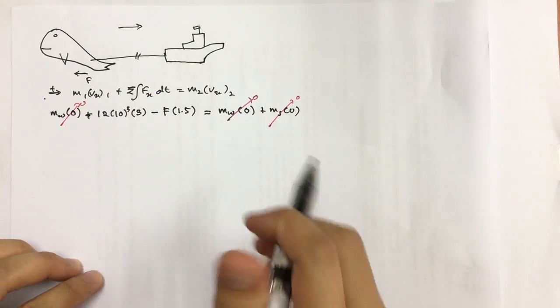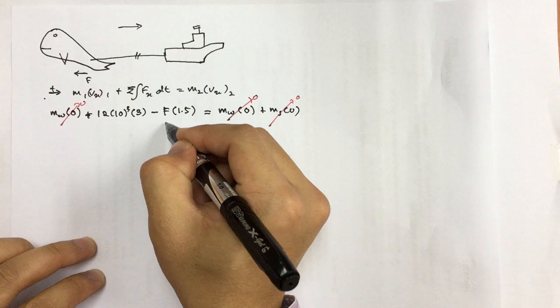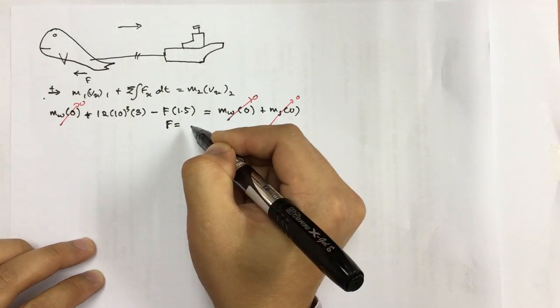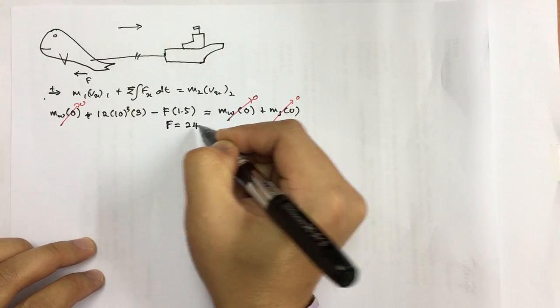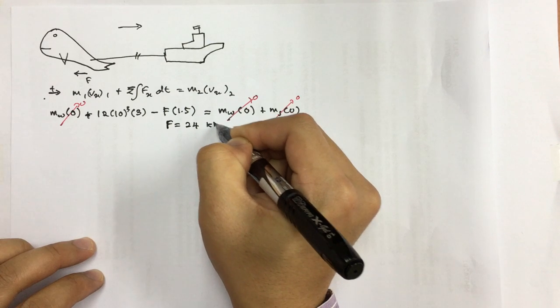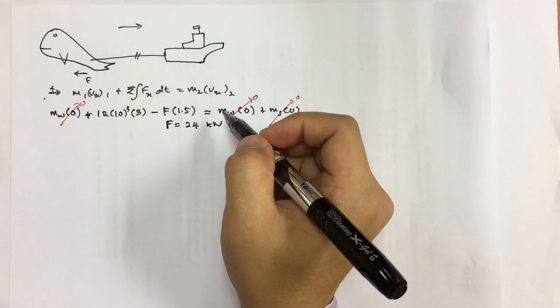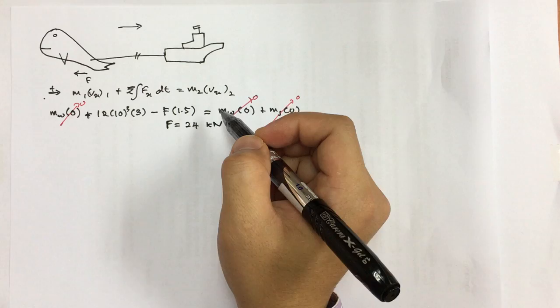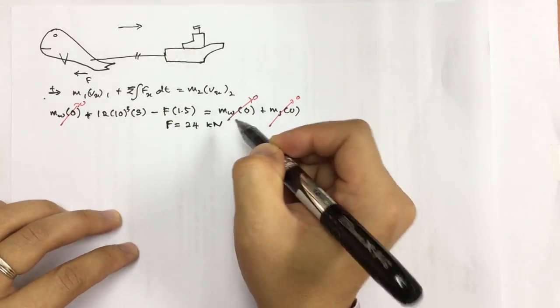Once we solve for the F, we can get F equals to 24 kilonewton. This is basically the average frictional force experienced by the whale.